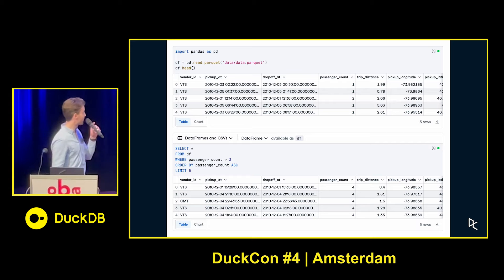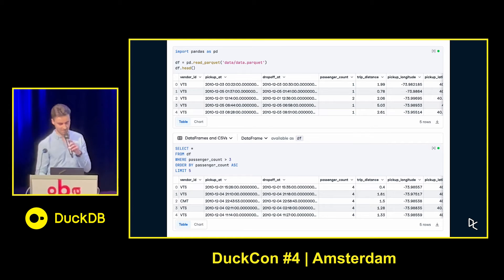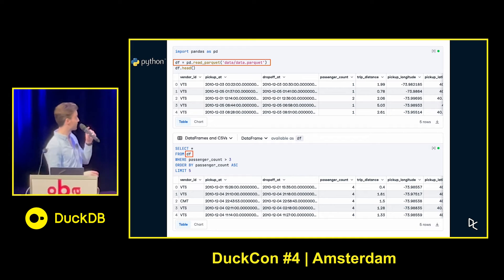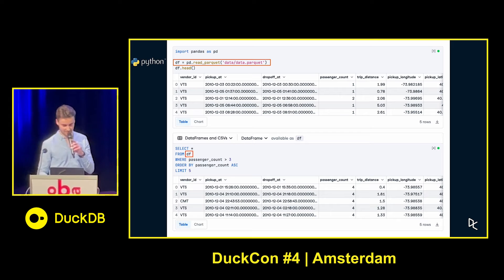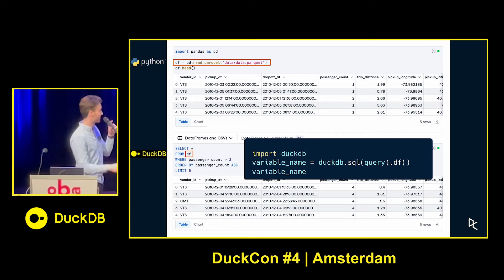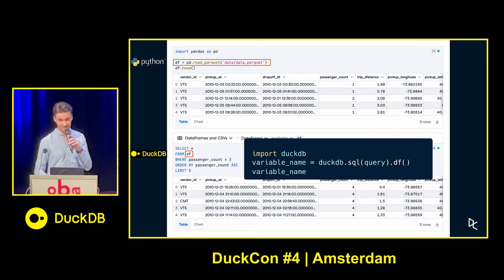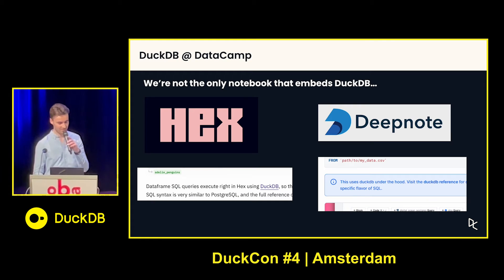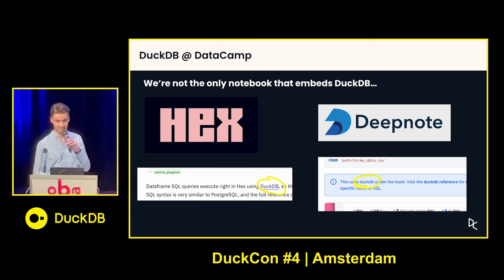We also have a special type of source — DataFrames and CSVs — where you can do something special. In the first Python cell, I'm creating a data frame called DF, and in the second one, I'm querying from that as if it's a table. Sounds like a feature that's hard to implement, but actually it's not, because this is just DuckDB. This is basically: import DuckDB, set a variable name, and execute the query. Very easy to build, saved me a lot of time. We're not the only notebook tool that embeds DuckDB this way — I'm calling out Hex and Deepnode, but basically every notebook tool does exactly this.